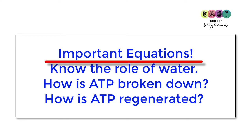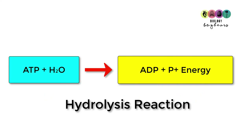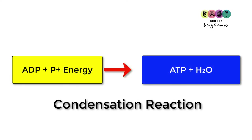ATP, with the addition of water, undergoes hydrolysis to produce ADP, inorganic phosphate, and released energy. When ATP is being regenerated, ADP and inorganic phosphate are combined with energy input, producing ATP and releasing a water molecule — this is known as a condensation reaction.